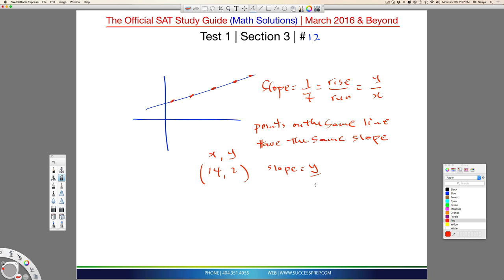We said that slope is y over x. Well, the y information is 2 over the x which is 14, and that gives you 1/7, which is the same as in the question.